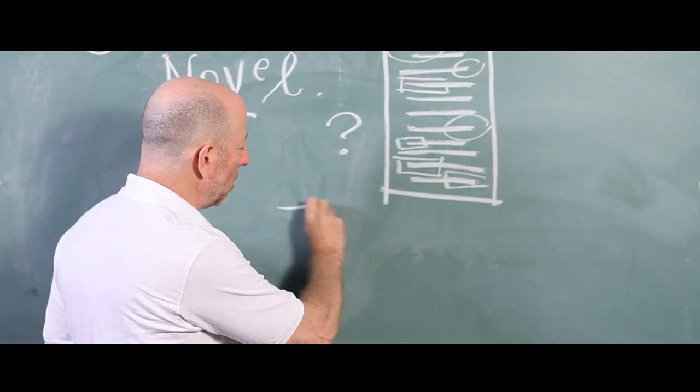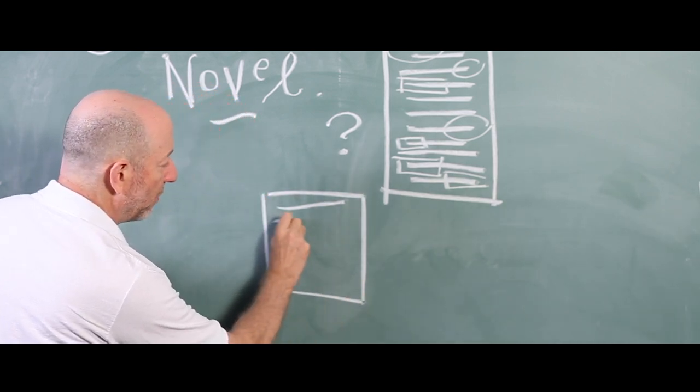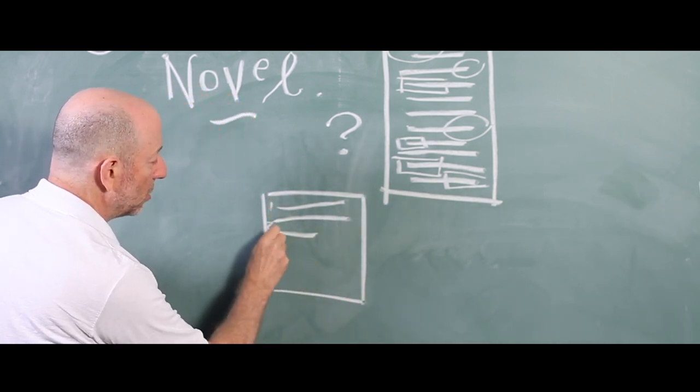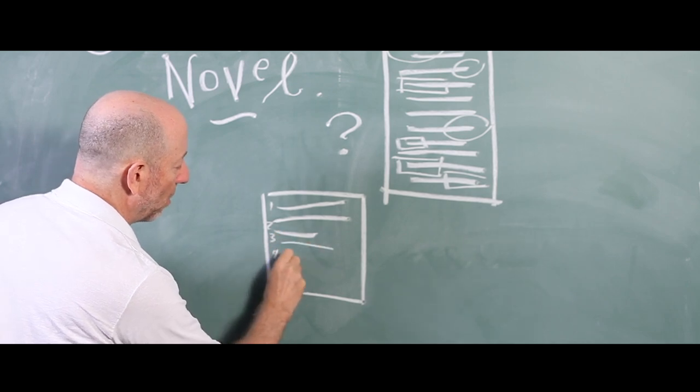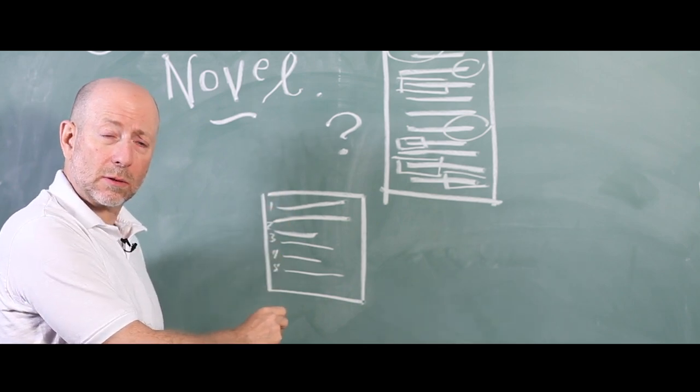And then on another sheet, you're gonna make a list of those one, two, three, four, five. Those important ideas in a kind of hierarchy, all right?